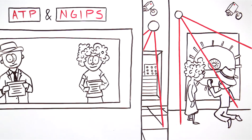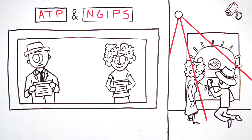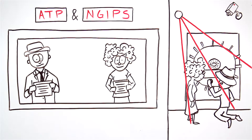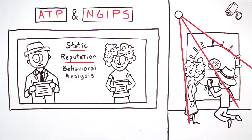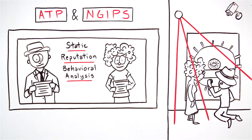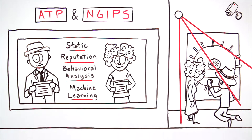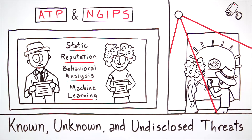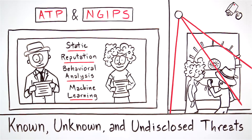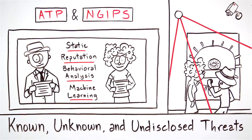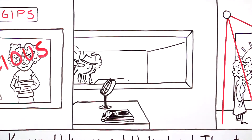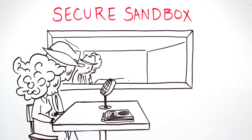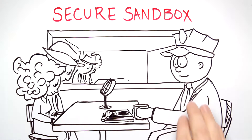ATP and NextGen IPS combine to use several types of detection techniques, including static, reputation, and behavioral analysis, as well as machine learning to protect you from known, unknown, and undisclosed zero-day threats coming across your network. If an object is considered suspicious, it will be analyzed in a secure sandbox environment to determine if it's a threat and how bad it may be.